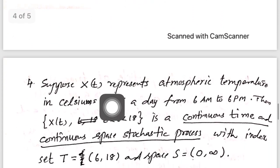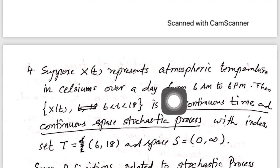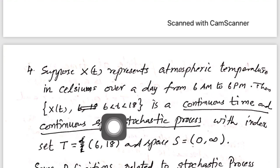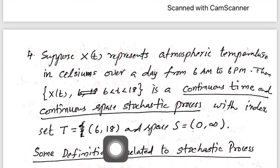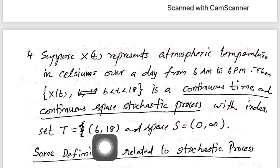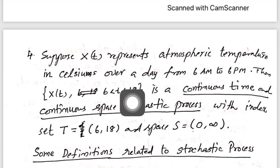Finally, we represented X(t) as atmospheric pressure in Celsius over a day from 6 a.m. to 6 p.m. (i.e., 6 to 18). Here T belongs to the continuous interval [6, 18] and the state space S equals [0, infinity) because temperature may be any positive number in degrees Celsius. Since the index set T is continuous and the state space is also continuous, this is an example of a continuous time continuous space stochastic process.